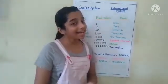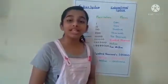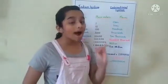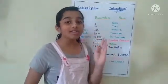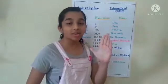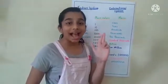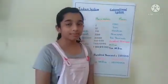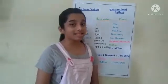In the Indian System of Numeration, we use Ones, Tens, Hundreds, Thousands, Ten Thousands, Lakh, Ten Lakh, and then Crores.